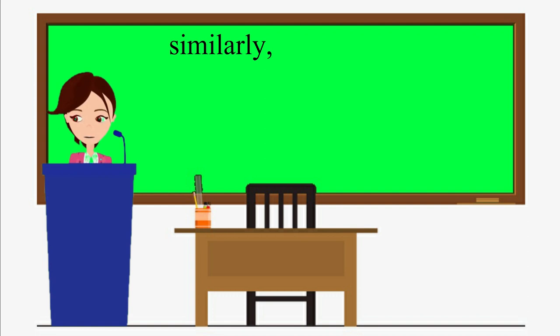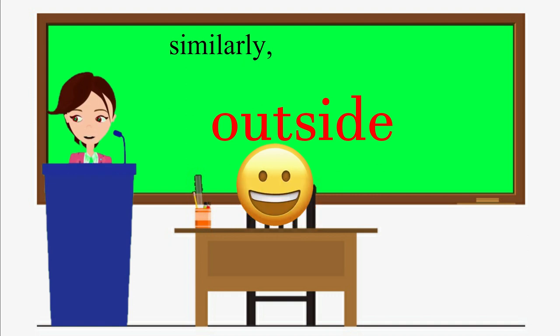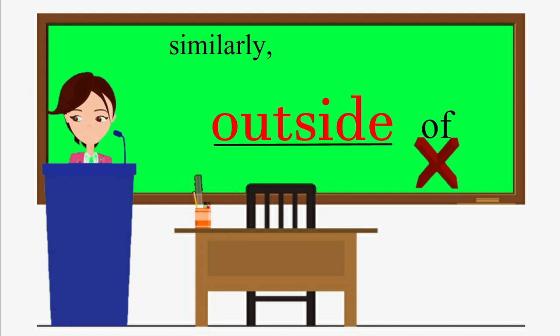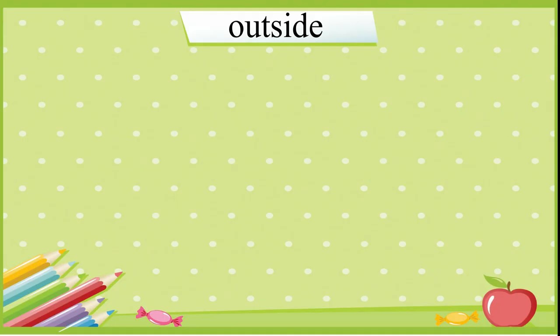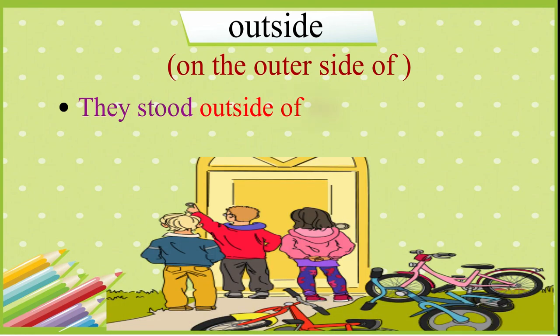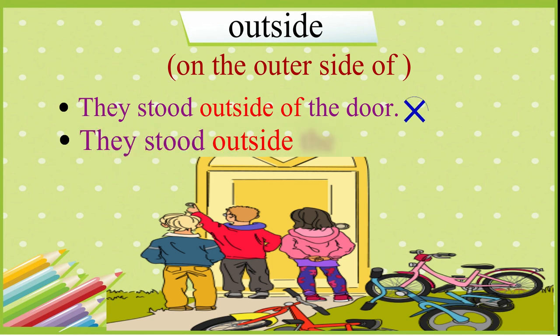Similar to the word inside, the usage of the word outside also needs to be considered. Outside. We do not say outside of. It is already included in the meaning of the word outside. Outside means on the outer side of. They stood outside of the door is incorrect. Repeat the correct sentence after me. They stood outside the door.